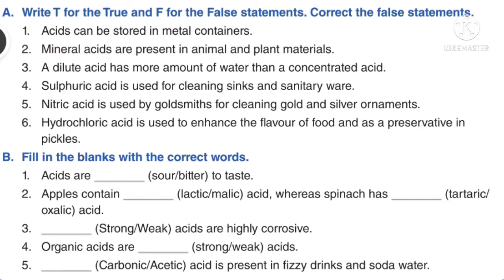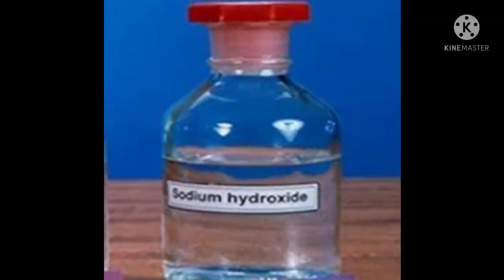In page number 71, the 'Let's Remember' section — try the true or false and fill-in-the-blanks. First: acids can be stored in metal containers — false. Mineral acids are present in animal and plant materials — false; that is organic acids. A dilute acid has more water than concentrated acid — true. Sulfuric acid is used for cleaning sinks and sanitary ware — false; that is hydrochloric acid, not sulfuric acid. Nitric acid is used by goldsmiths for cleaning gold and silver ornaments — true.